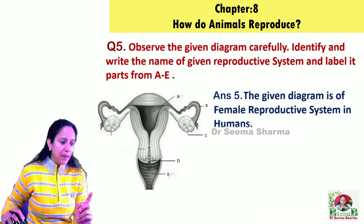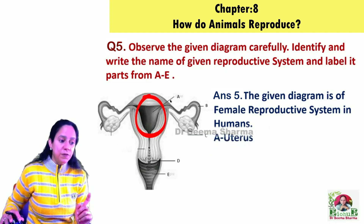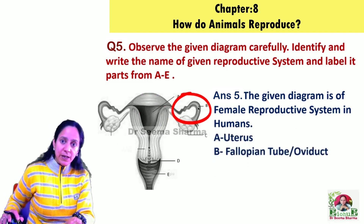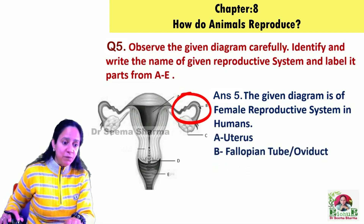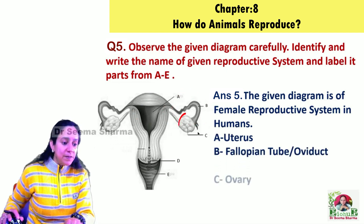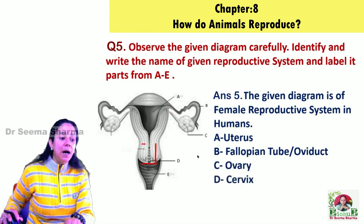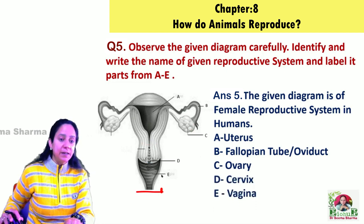Coming to the labeling part: part A is uterus, part B is fallopian tube (also known as oviduct), part C is ovary, part D is cervix, and part E is vagina. This is how you have to attempt a diagram-based question.